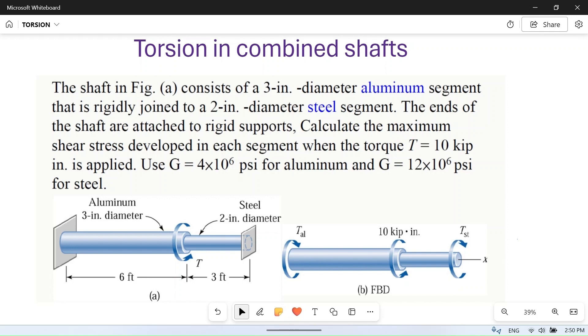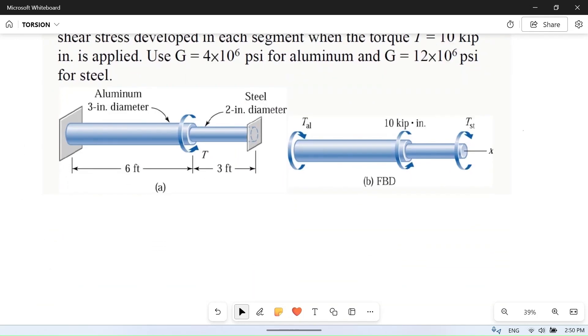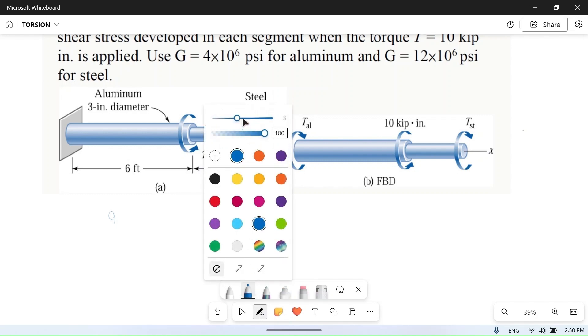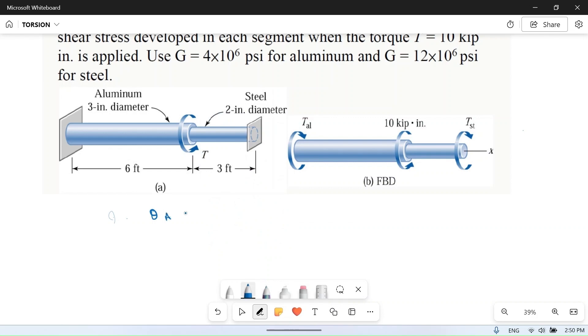These two shafts are in parallel. The first condition is that θ, or angle of twist, will be the same for both shafts. So θ_aluminum = θ_steel. The torsional formula is T/J = τ/r = Gθ/L.